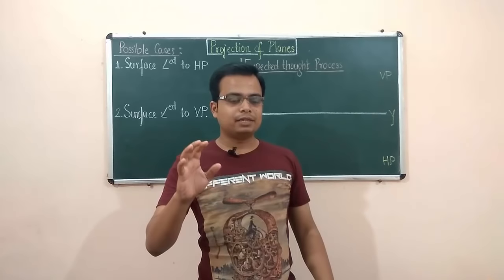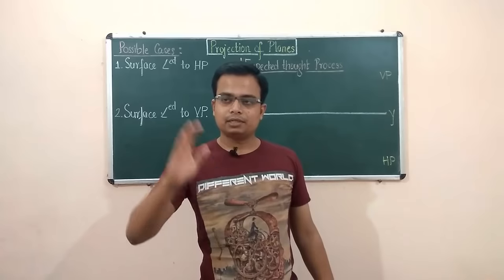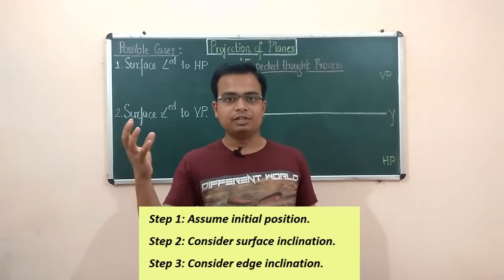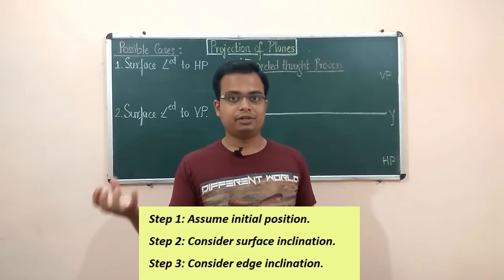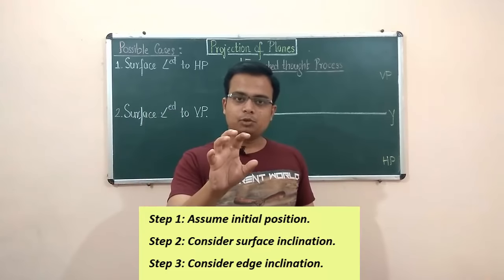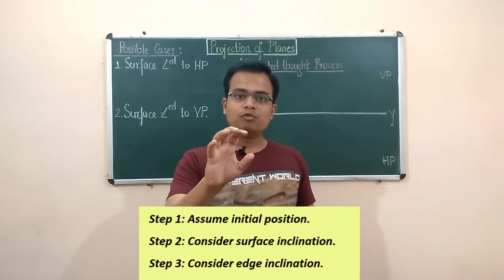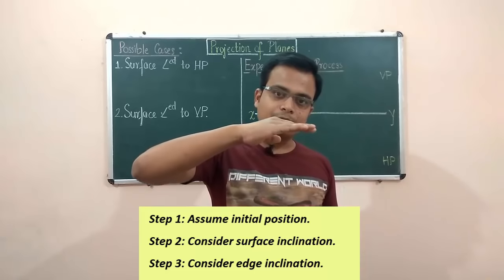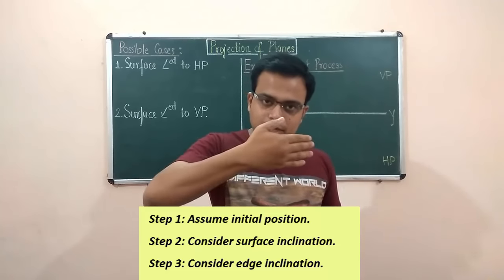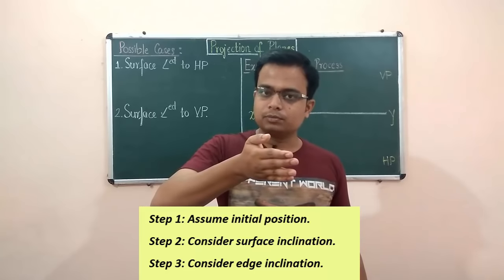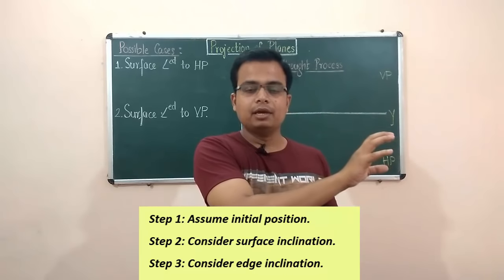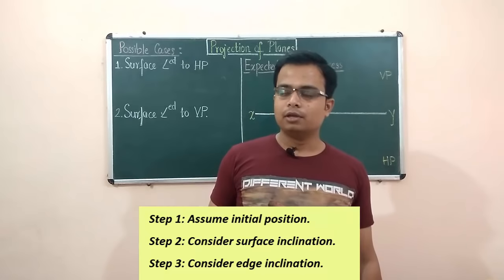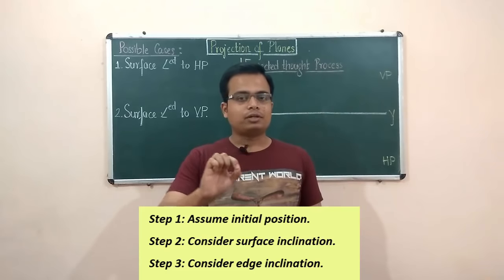Step one, step two, step three. In step one you have the initial assumption. In step two you have to go for surface inclination — that surface inclination could either happen with the horizontal plane or with the vertical plane. And then in step three you have to go for edge inclination.